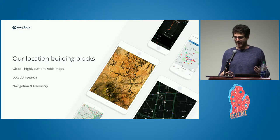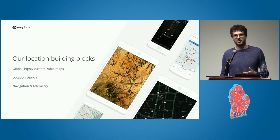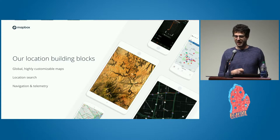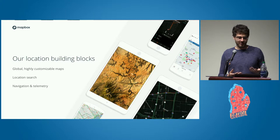What do we provide? We provide these building blocks: global coverage of mapping data, highly customizable maps so you can match a particular design or brand, location search including geocoding, reverse geocoding, and points of interest, navigation APIs for routing point A to point B, and telemetry data to build a better map for everybody. One of our newest pieces is the Vision SDK, still in beta, which brings machine learning and computer vision to improve the map and enable new location experiences like in-car heads-up displays.